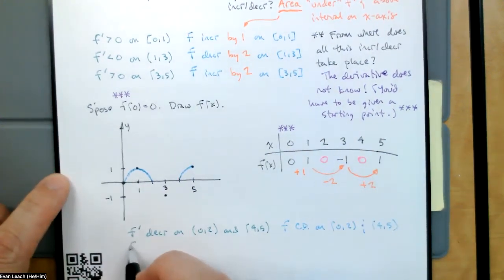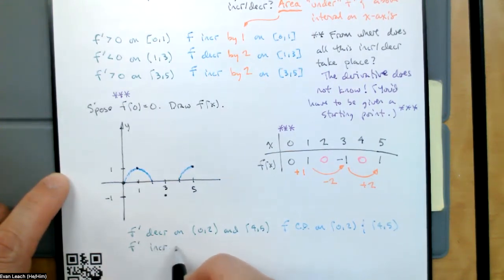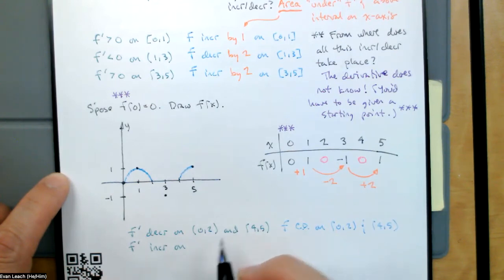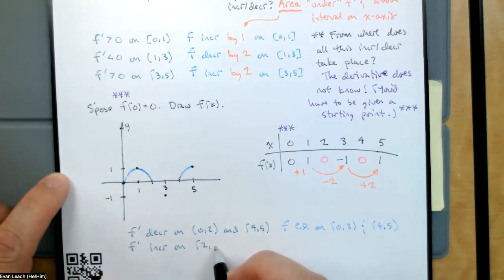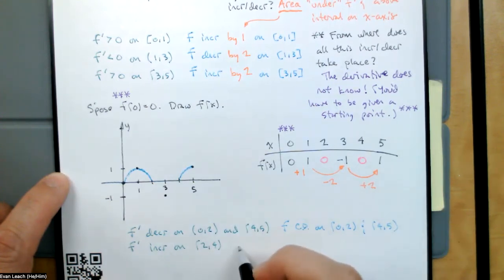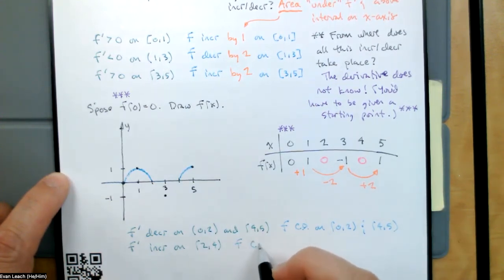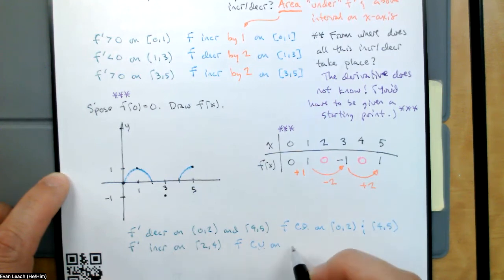But back to concavity — f prime is increasing on the interval from 2 to 4. So we'll draw f concave up on the interval from 2 to 4.